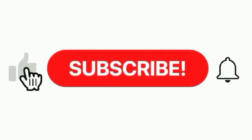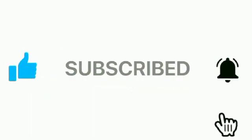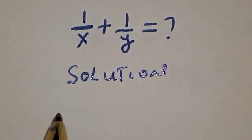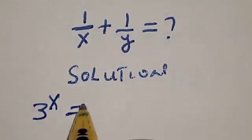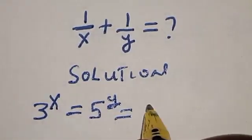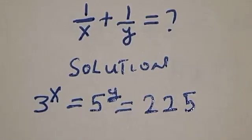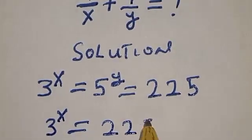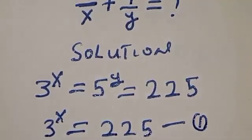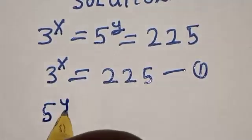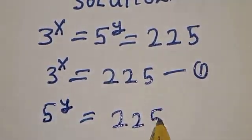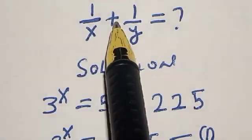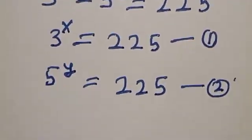Before we move on, like, share, comment and subscribe. Solution: 3 raised to power x is equal to 5 raised to power y is equal to 225. Now, 3 raised to power x is equal to 225 — let's call this equation 1. Also, 5 raised to power y is equal to 225 — let's call this equation 2. We want to find the value of 1 divided by x plus 1 divided by y. Let's use this trick from equation 1.